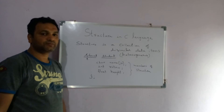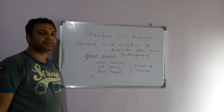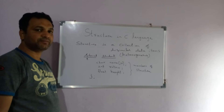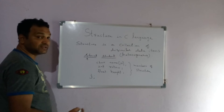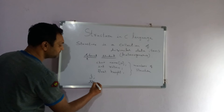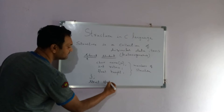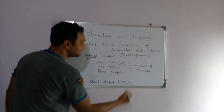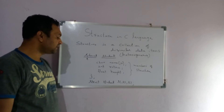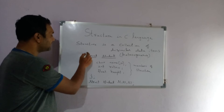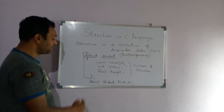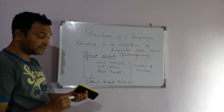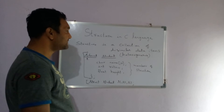Whenever you define a structure, it will not allocate any memory for that particular structure. We are just creating a template. Using this template, we can create as many variables as you want. How to declare variables of this structure: struct student s1, s2, s3. This is how we create a variable. Defining the structure will not allocate memory, but when you declare variables of the structure, it will allocate memory.